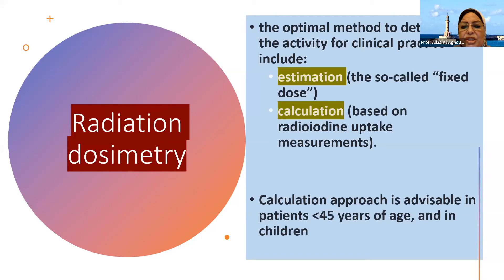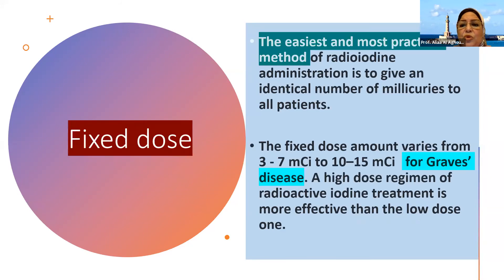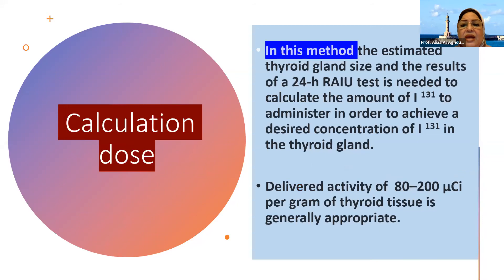The fixed dose is the easiest and most practical method for radioiodine administration. The fixed dose varies from 3 to 7 microcuries to 10 to 15 microcuries for Graves' disease. A high-dose regimen is more effective than a lower-dose one. With the calculation method, the estimated thyroid gland size and the result of the 24-hour radioactive iodine uptake test are needed to calculate the amount of iodine to administer. A delivered activity of 80 to 200 microcuries per gram of thyroid tissue is generally appropriate.